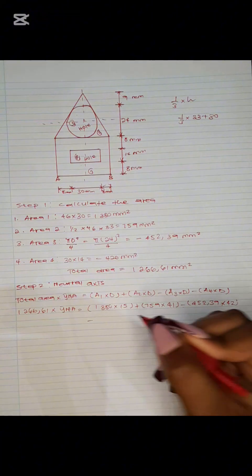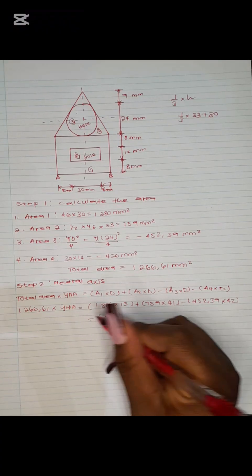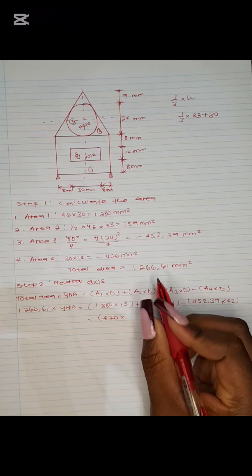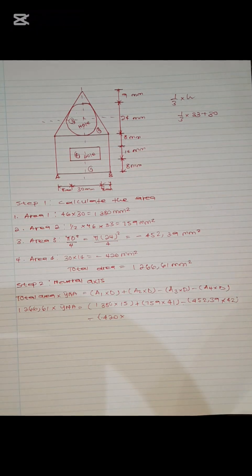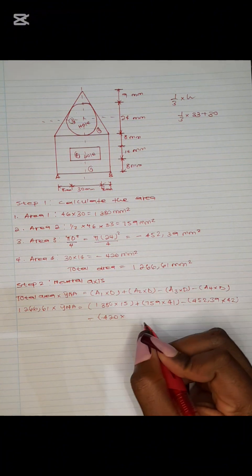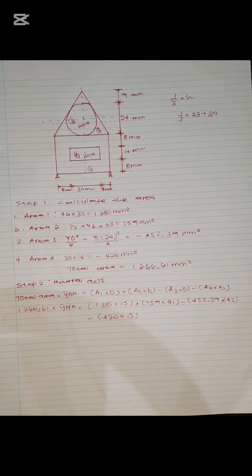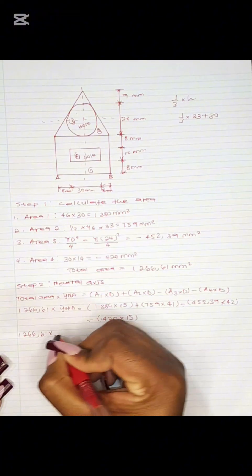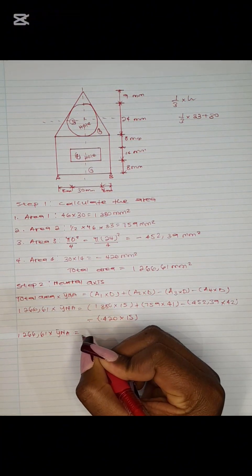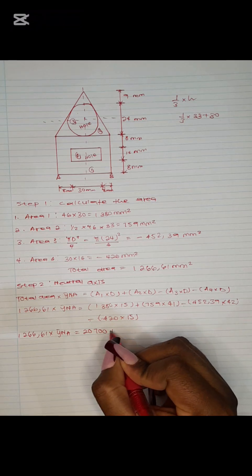Minus Area 4 (420) times the distance of Shape 4. The distance is 8 plus half of 14 (which is 7), giving 15 mm. Now punch all of this into the calculator: 1266.61 × NA = (1380 × 15) + (759 × 41) − (452.39 × 42) − (420 × 15), which gives 20700 + 31119 − 19000 − 6300.